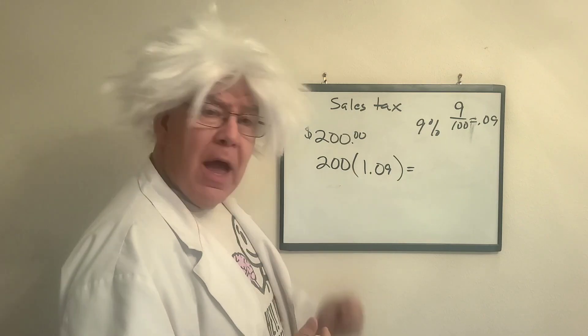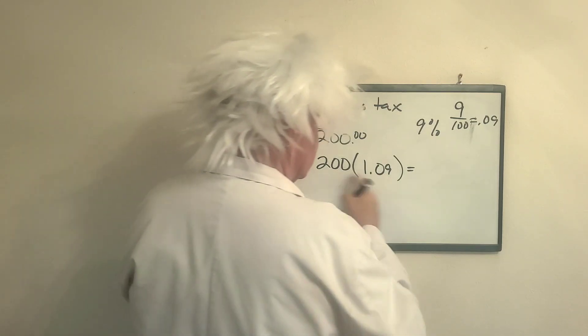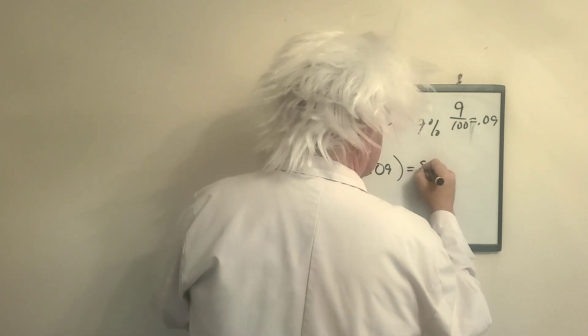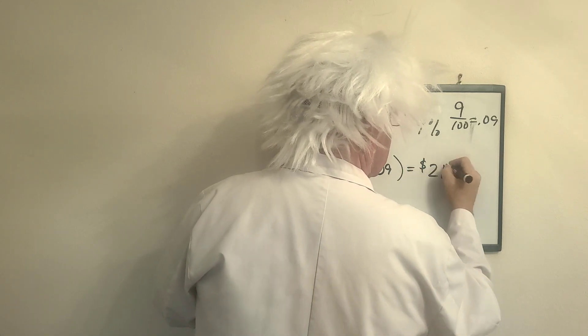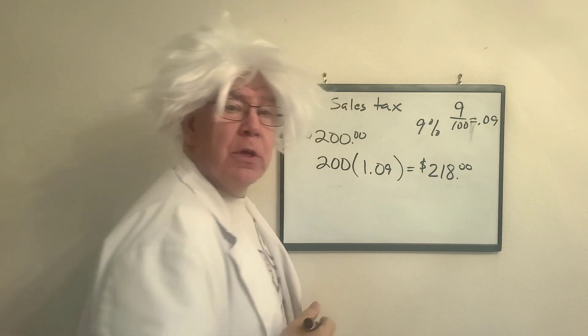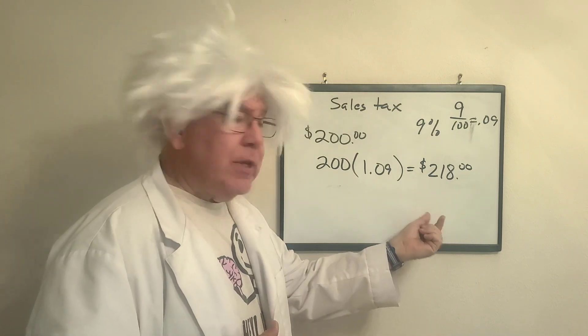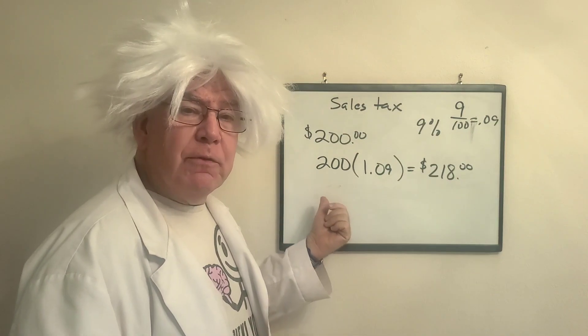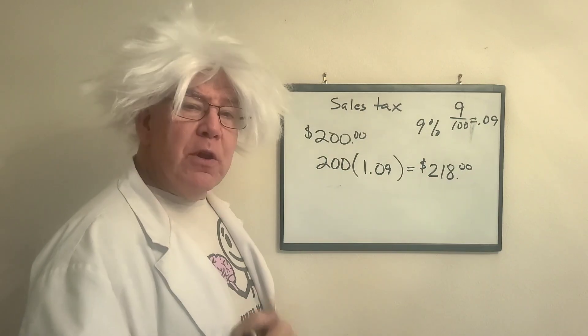Okay. Now, with 9%, basically what I do is I multiply this and I'm going to get $218. Now, how much of that was taxed? Well, 9% of 200 is 18. So there you go.